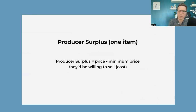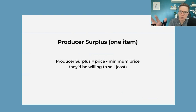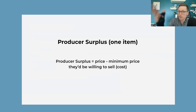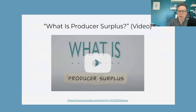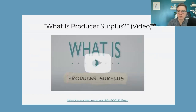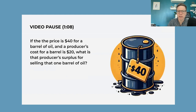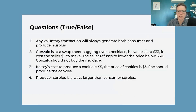Producer surplus is the price minus their cost — basically, what is the lowest they would have sold it for, which is their cost, and then what they get for it, the price. The difference there is their producer surplus. We have a video that describes producer surplus, pausing at points to ask questions.